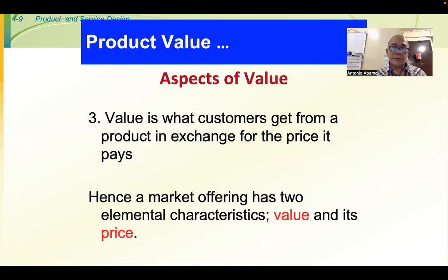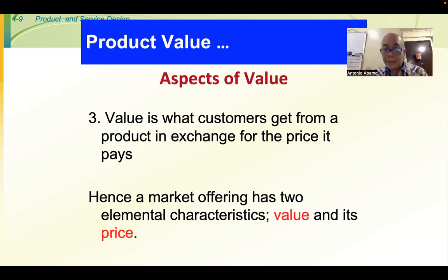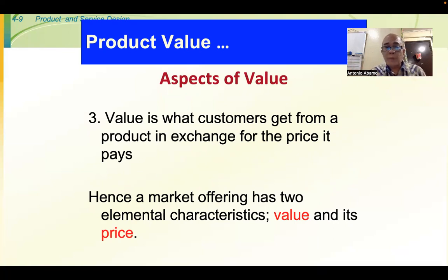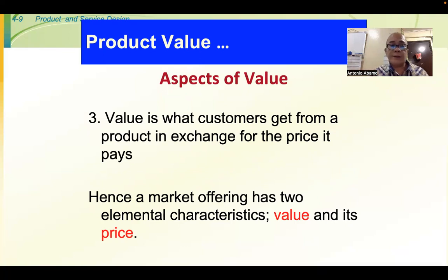There are three aspects of value. One is monetary. The other is benefit — not necessarily monetary — what we call net benefit. The third aspect is that value is what customers get from a product in exchange for the price they pay. For example, if I pay you a certain amount, you work with me a certain number of hours, because the value of your skills is equivalent to that particular amount. A market offering has two elemental characteristics: value and price.